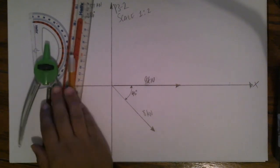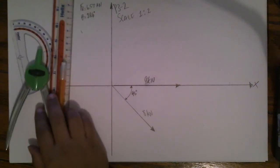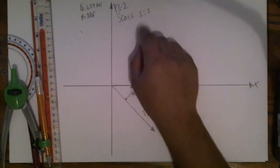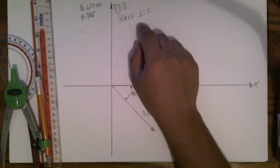First you draw the problem to scale. I have chosen a scale that will allow me to draw the problem on paper. The scale I have chosen is 1 to 2. This means that every inch on paper represents 2 kilonewtons.